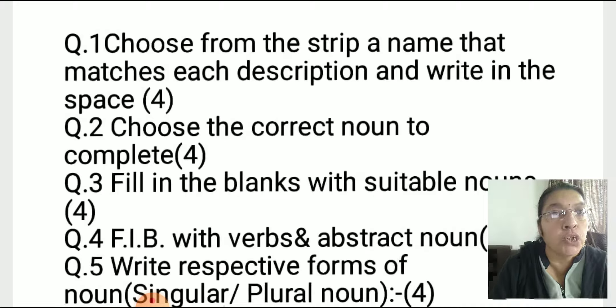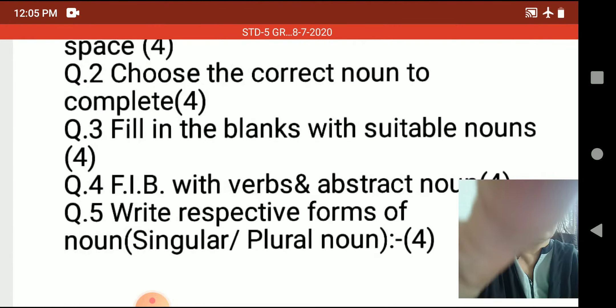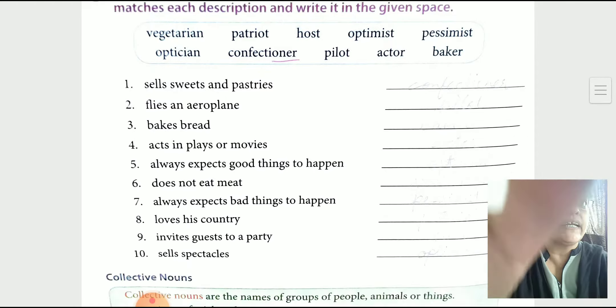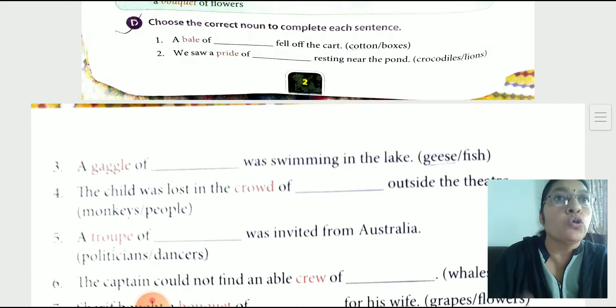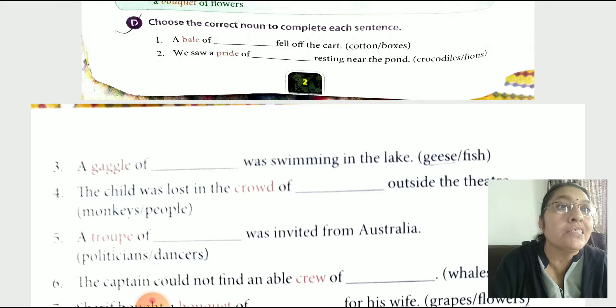As per question 2, choose the correct noun to complete. Exercise D. I already explained about Exercise C. Choose the noun to complete each sentence. In that question also we give options. The gaggle of dash was swimming in the lake. Geese or fish? Correct answer you have to choose: Geese. Understand roman 2.